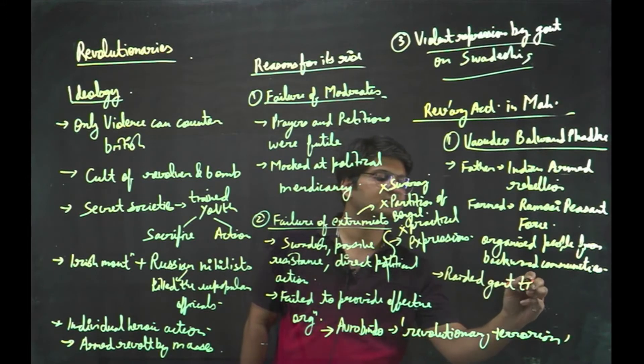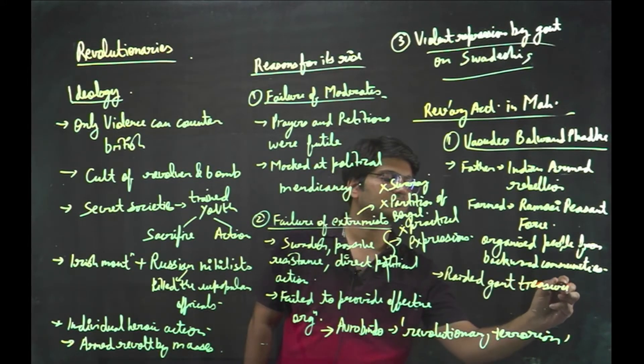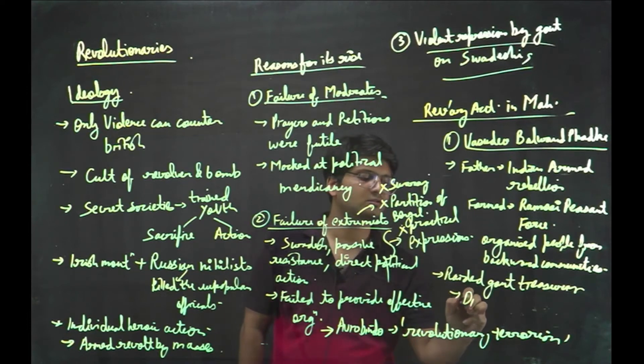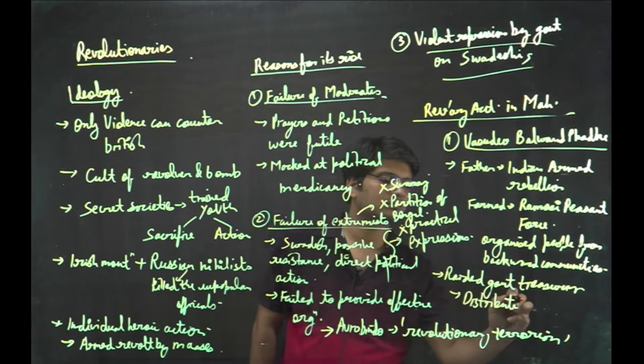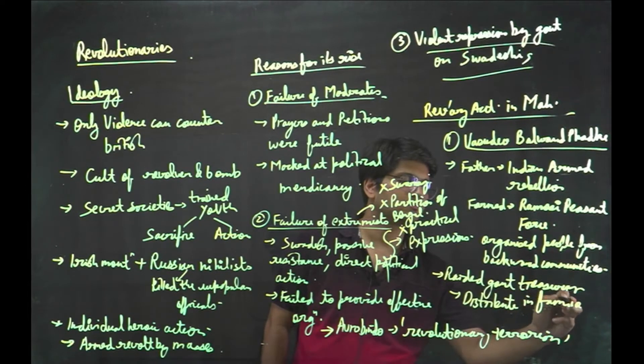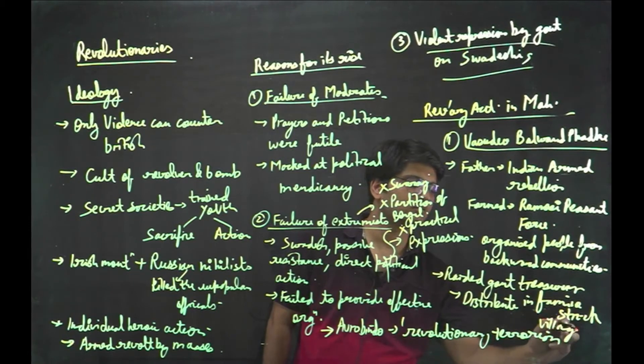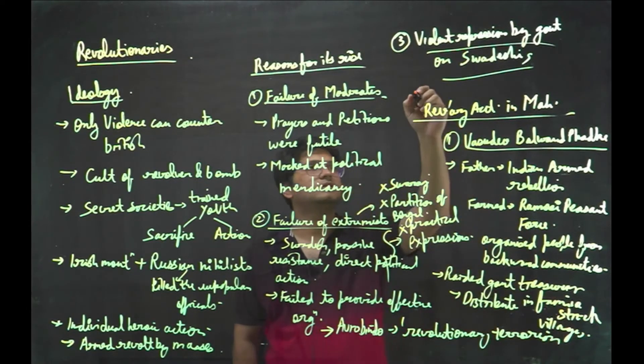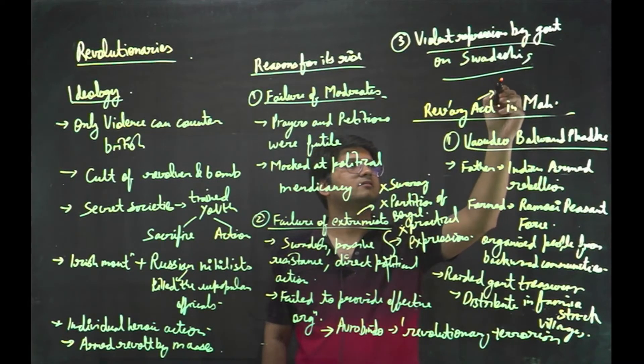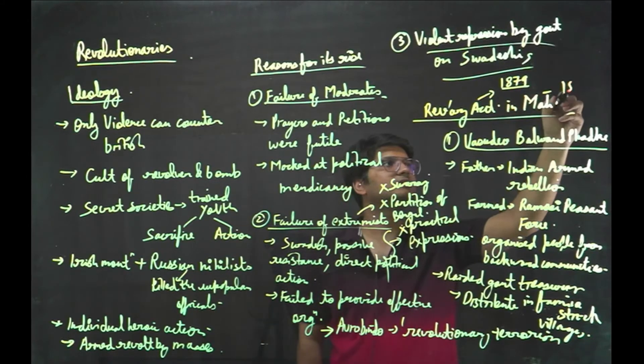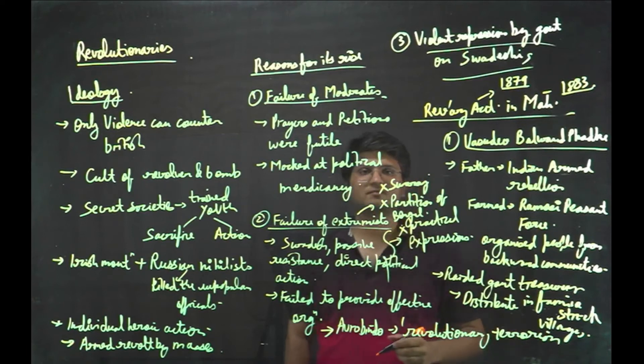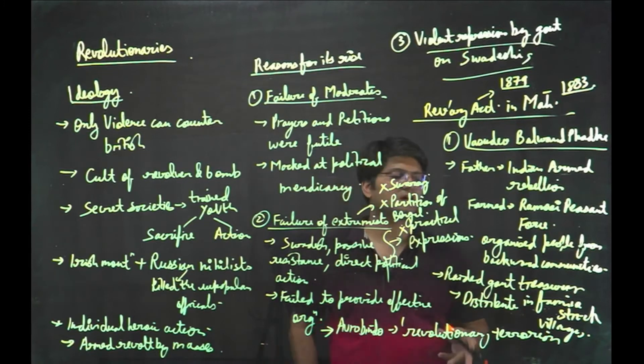And then he raided the government treasury and distributed that wealth into the famine struck villages. He was given life imprisonment in 1879 and in 1883, he sacrificed his life by going on a hunger strike. So it was the first instance in Maharashtra, particularly from the Chitpavan Brahmins.